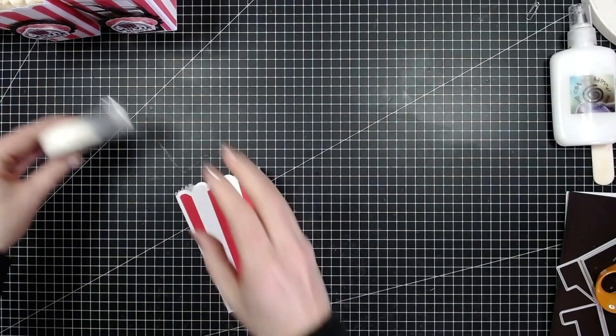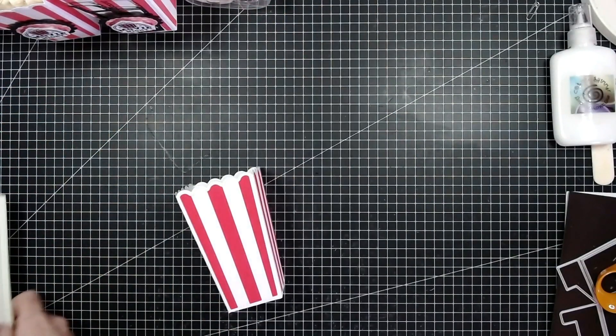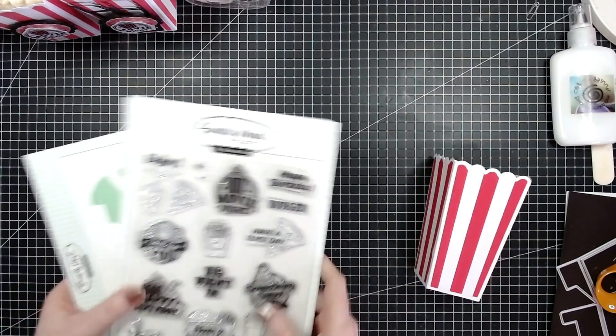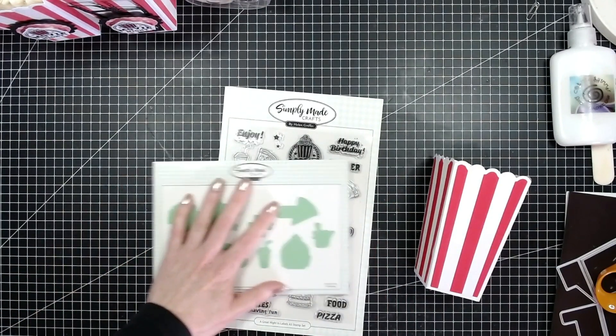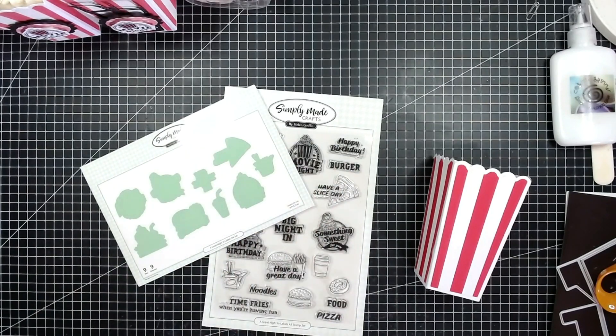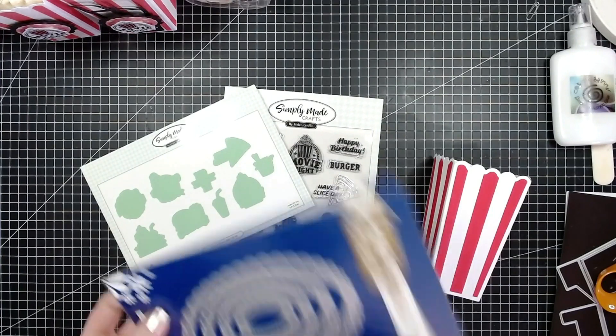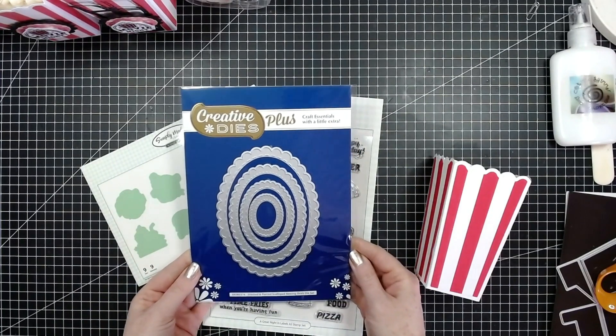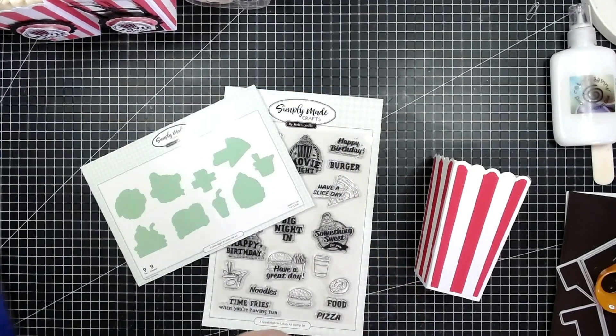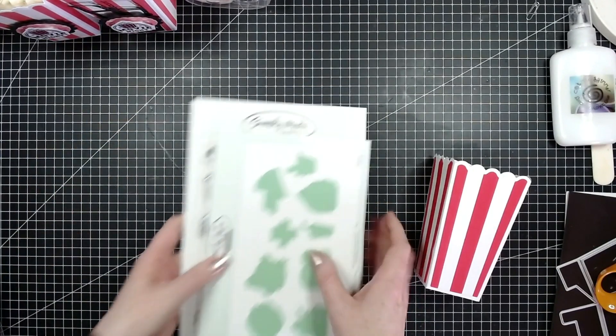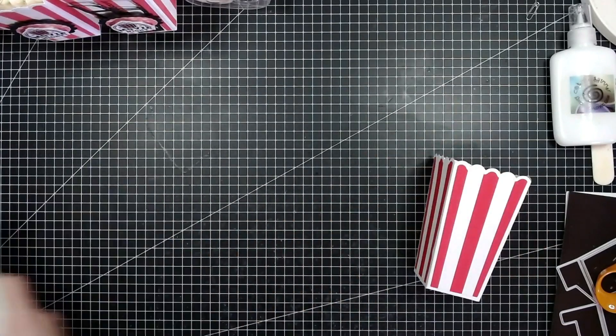All I need to do now is decorate this. I'll be using this stamp set, this die set that's going to cut out my image, and also one other thing—this die set here from Creative Dies, the Stitched and Pierced Scalloped Nesting Ovals die set. Everything that I'm using today will be listed down below.